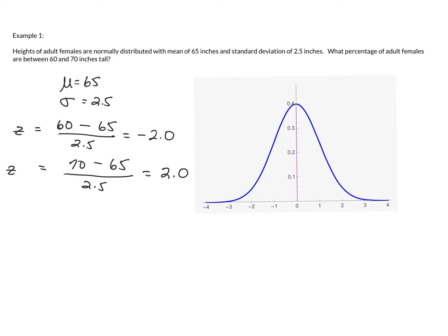So we want to find the percentage of scores between a z-score of negative 2 and positive 2, or within two standard deviations of the mean. Using the 68-95-99.7 rule, that should be 95%. So approximately 95% of adult females have heights between 60 and 70 inches tall.